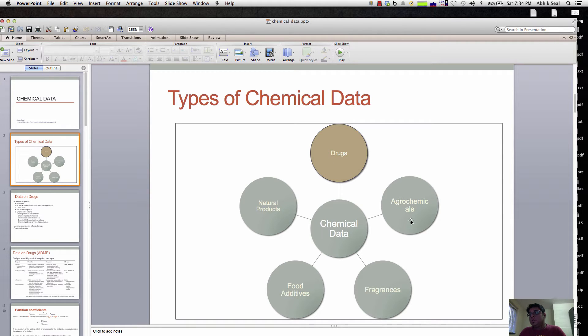Natural products is linked to drugs as well as agrochemicals, and there are food additives for daily use and fragrances which are aromatic compounds. There's a lot of chemical data in all these domains, but our focus in this course is mostly on drugs.